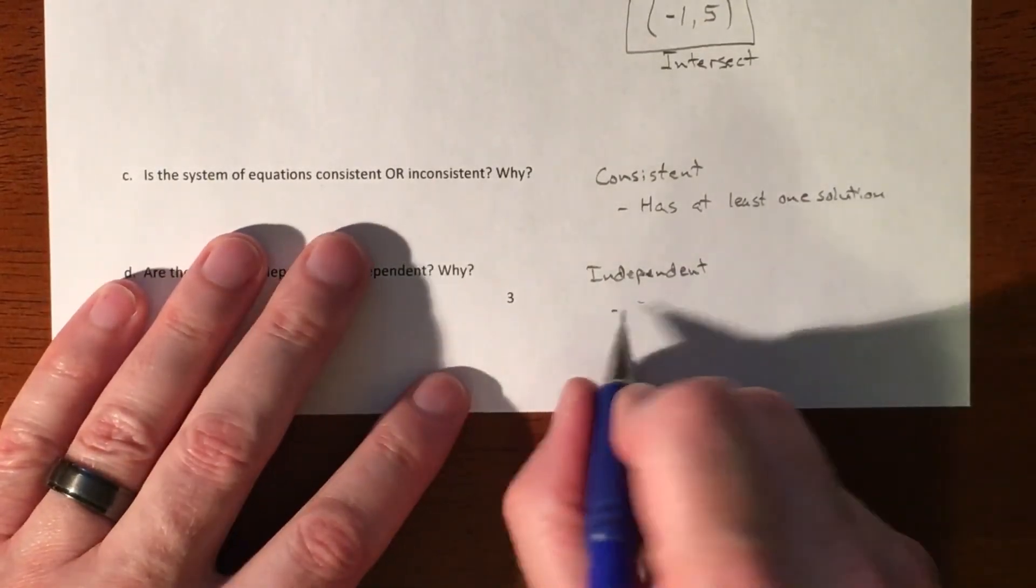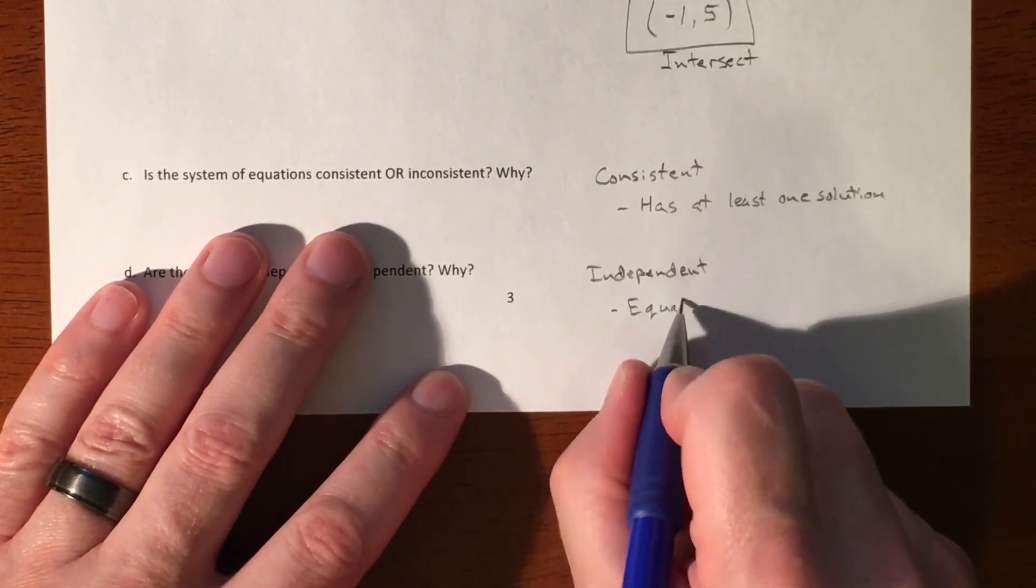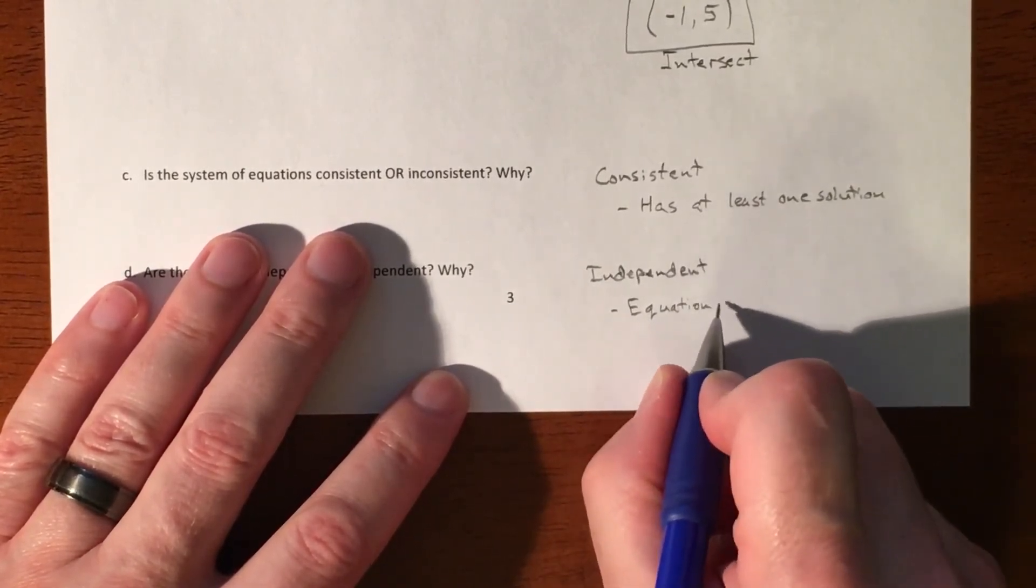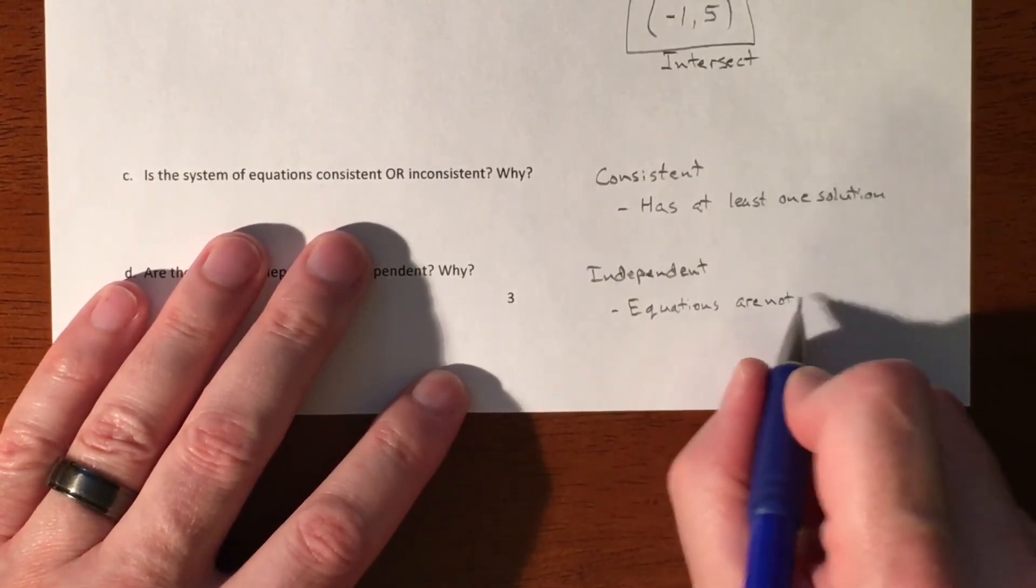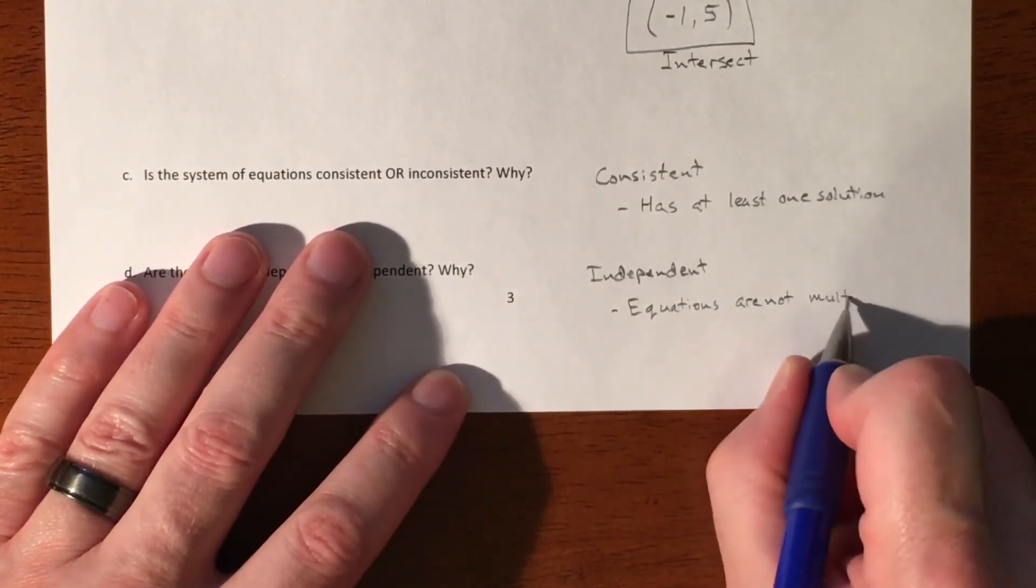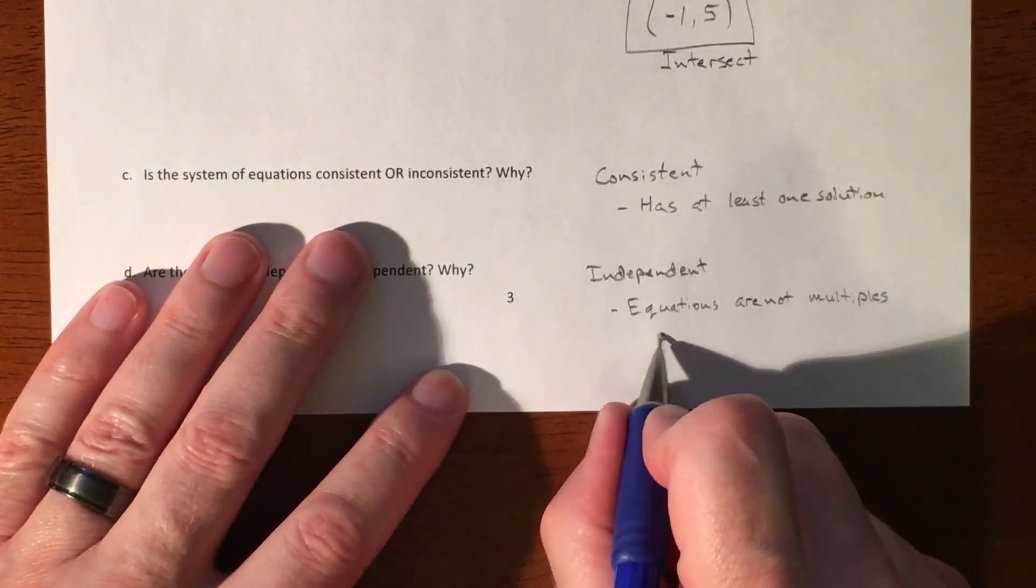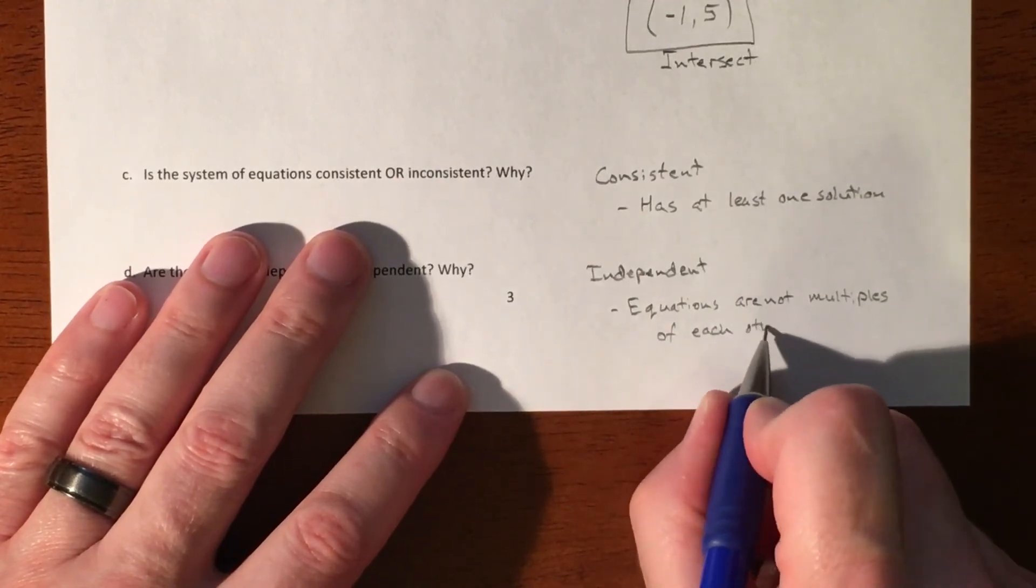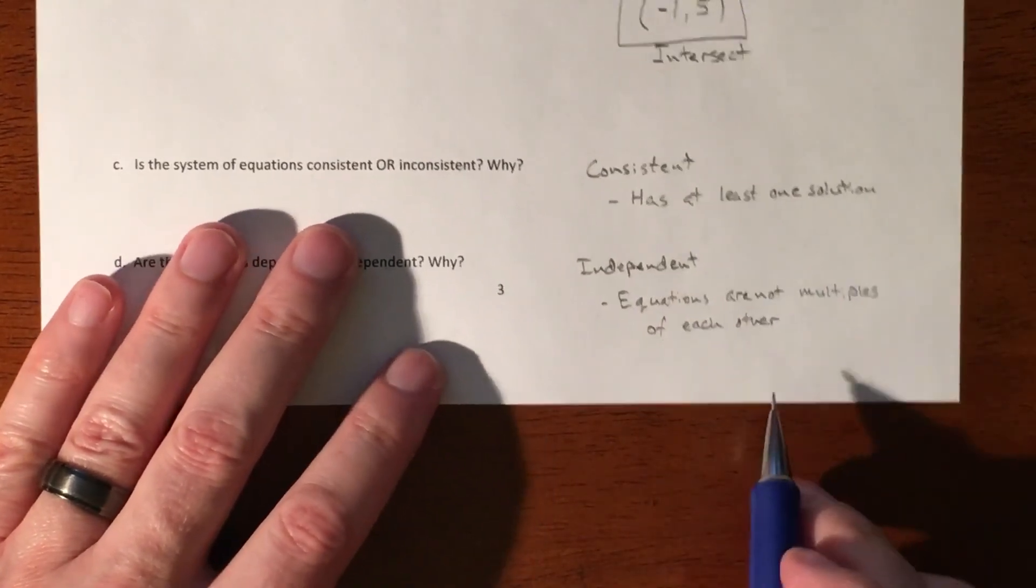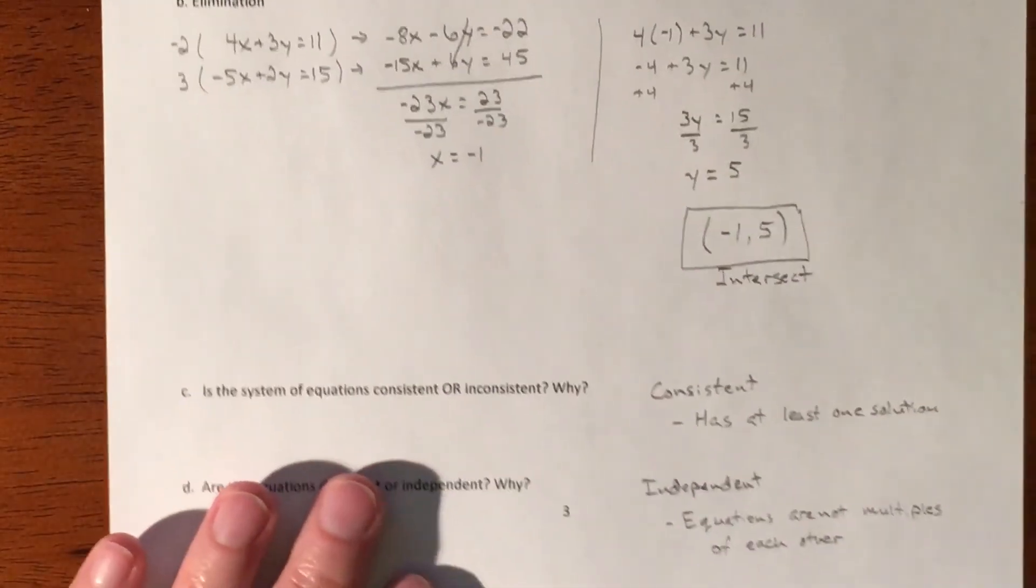And then our last problem is we only do have one solution. So that is independent. And the reason is the equations, in order for it to be infinite solutions, the equations are not multiples of each other. So in order for infinite solutions to happen, they actually have to be perfect multiples of each other. And we definitely don't have that.